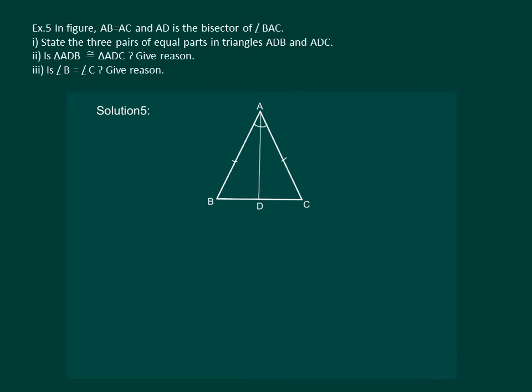Let us read the next question. In the given figure, AB = AC and AD is the angle bisector of angle BAC. State three pairs of equal parts in triangles ADB and ADC.